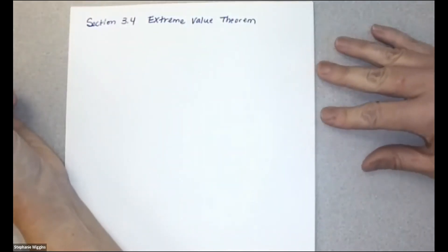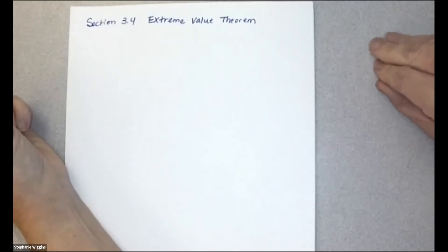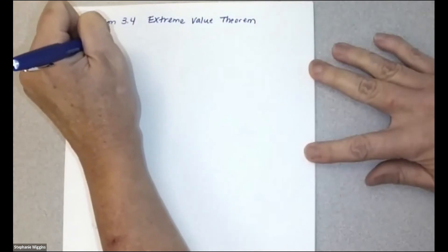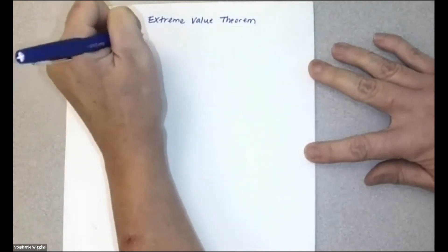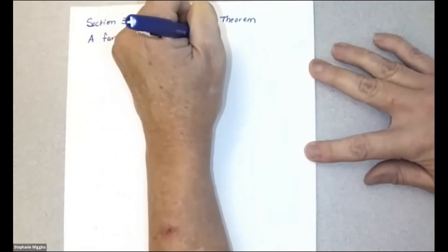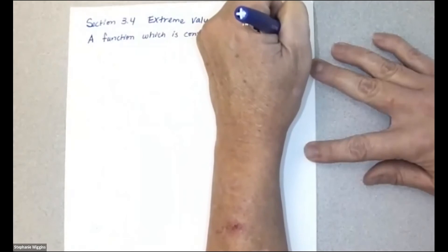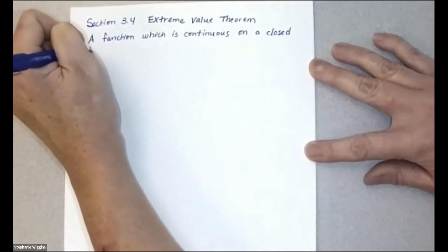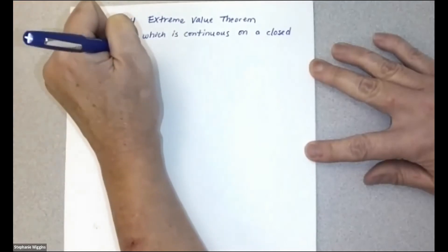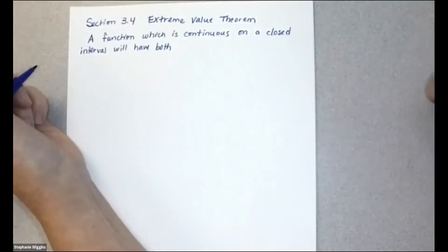The Extreme Value Theorem states that if you have a function that's continuous on a closed interval, then you're guaranteed for that function to have a maximum and a minimum value — and these aren't relative maximum and min, these are absolute max and min.